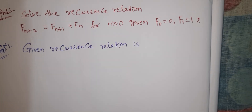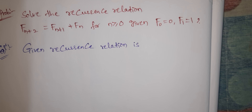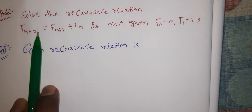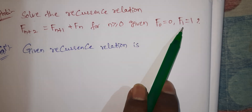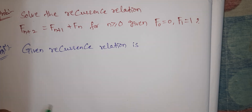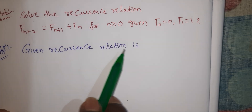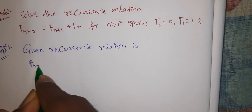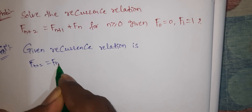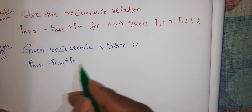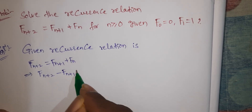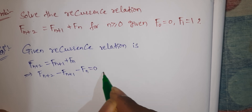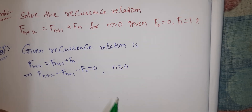Hi viewers, welcome to Rajesh Nekaloo. Today our topic is recurrence relation problems. Solve the recurrence relation f(n+2) = f(n+1) + f(n) for n ≥ 0, given f(0) = 0 and f(1) = 1. Solution: the given recurrence relation is f(n+2) = f(n+1) + f(n), which implies f(n+2) - f(n+1) - f(n) = 0 for n ≥ 0.